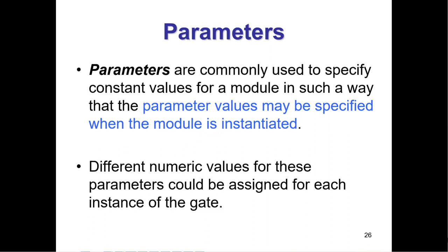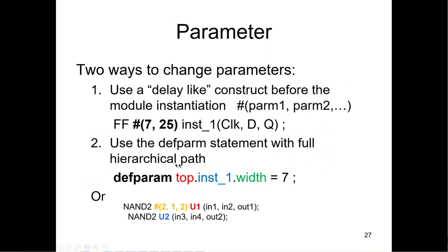You can use defparam statements with a logic path. That defparam statement can be anywhere in your code, not even in the same module where you're changing parameters — that's why it's a little bit dangerous to use. A number of companies have outlawed defparam statements because they can cause bugs that are very difficult to find. If you just get rid of your defparam statements, you won't have to worry about it. To use defparam, you need the top-level module name, the instantiation name, and the parameter name.